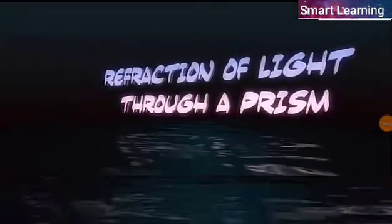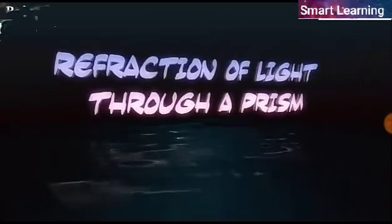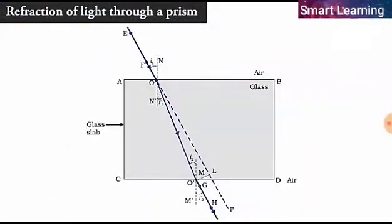Refraction of light through a prism. You have learned how light gets refracted through a rectangular glass slab. For parallel refracting surfaces, as in a glass slab, the emergent ray is parallel to the incident ray.